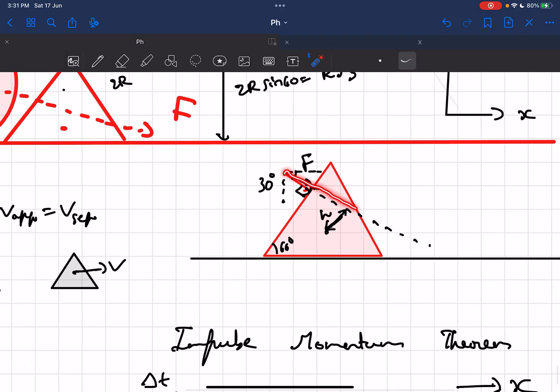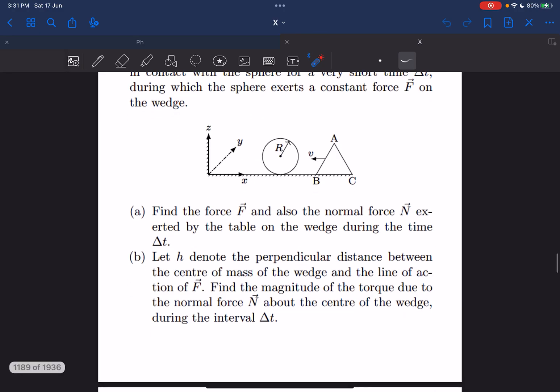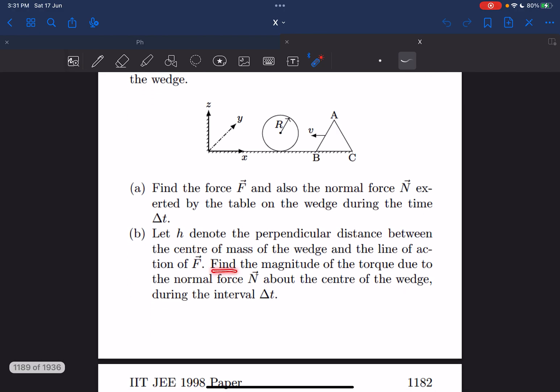In this case we assume the line of action to be this way, and this is the center of mass of the wedge. They're given this perpendicular distance to be h. In that case we need to find the magnitude of the torque due to the normal force about the center of the wedge.